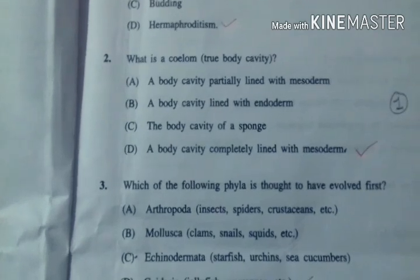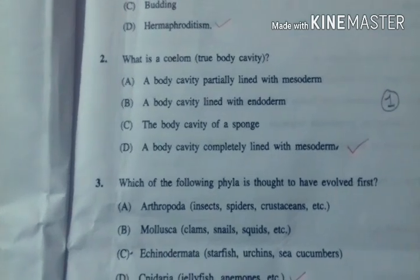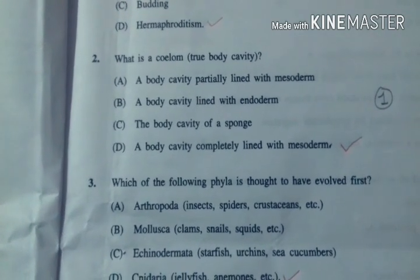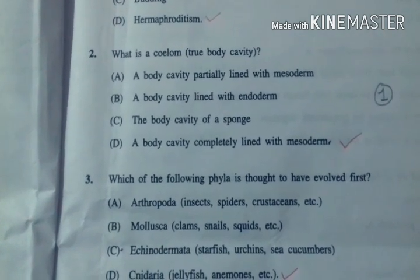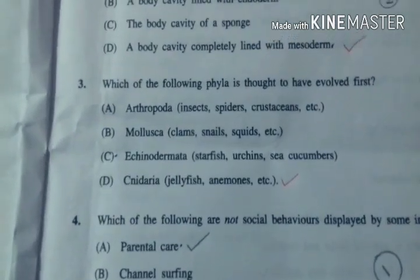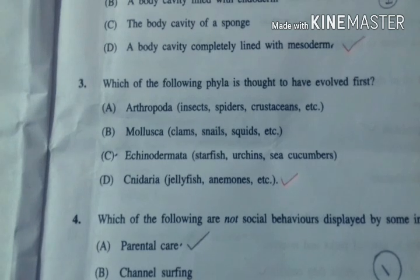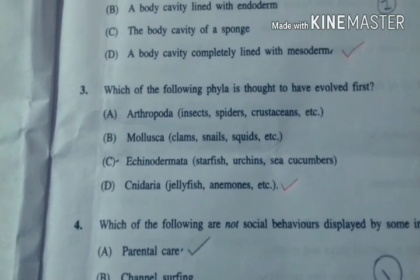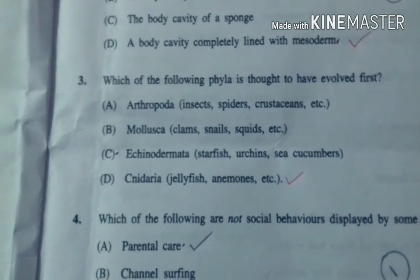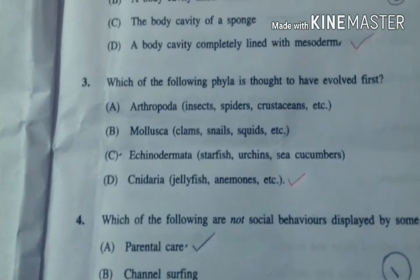The second question was: what is a coelum? A true body cavity. The correct answer was D. The third question is: which of the following phyla is thought to have evolved first? The correct answer is D.